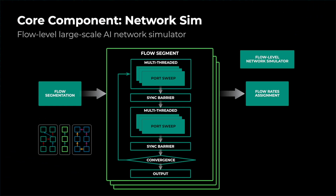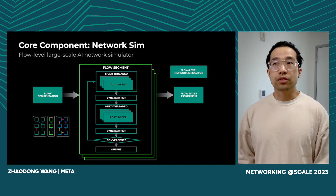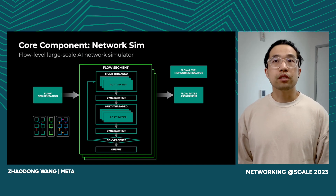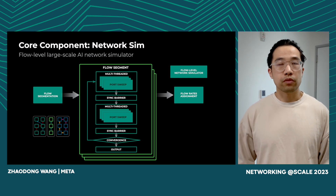Now let's move to the network simulator component, which is another core component of Arcadia. Since the network involves multiple jobs and their iterations, accurately simulating network performance is pretty difficult and very challenging to scale up. So we have developed algorithms that can segment the network flows if they are not interfering with each other, so that we can maximize the concurrency of the simulator with multiprocessing. The flow segmentation is dynamic and adaptive. With this optimization, we are able to simulate tens of thousands of GPUs in a cluster and estimate the flow assignment for millions of concurrent flows within seconds.